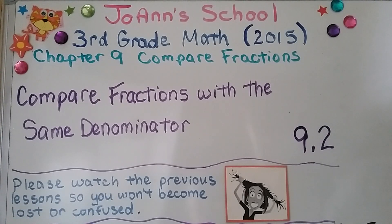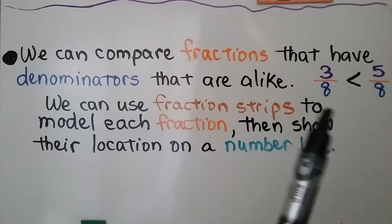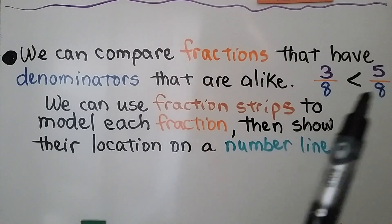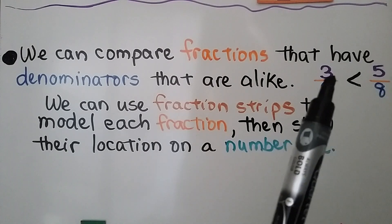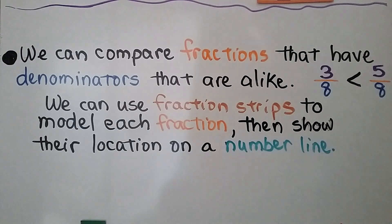Third grade math lesson 9.2. We're going to compare fractions that have the same denominator. We can compare fractions that have denominators that are alike. We have 3 eighths and 5 eighths — they have the same denominator. We can use fraction strips to model each fraction, then show their location on a number line.